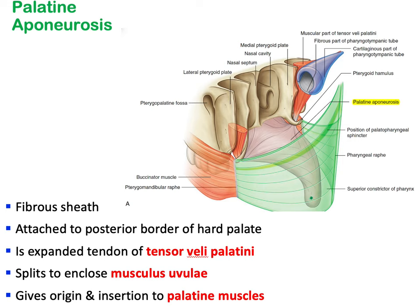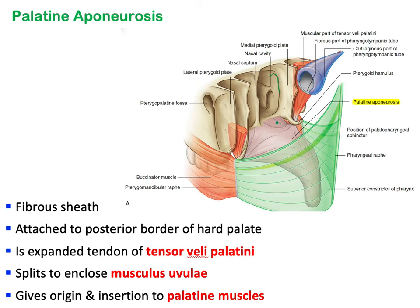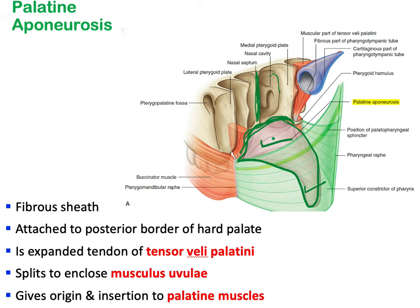We will discuss the aponeurosis, muscle fibers, muscles, vessels, and nerves of the soft palate. Looking at a posterior view, this is the posterior opening of the nose with the nasal septum dividing the nose into right and left compartments. The uvula is visible here as part of the soft palate, attached to the posterior border of the hard palate, covered by a fibrous sheath.